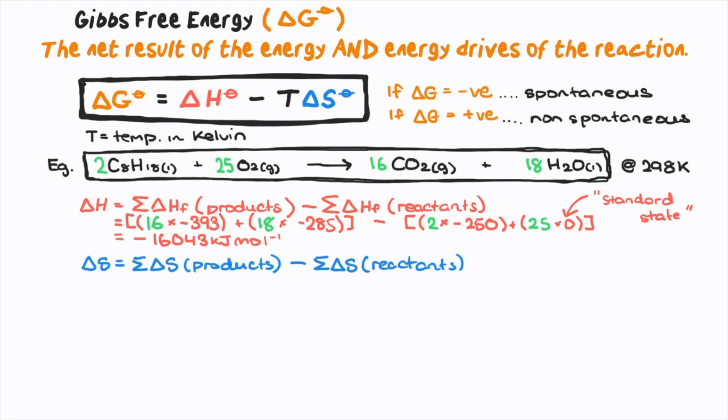Now delta S is the sum of entropy change of products minus reactants. So here those are, and the answer is negative 1163 joules per mole. But we need to convert to kilojoules so it's consistent.